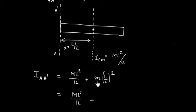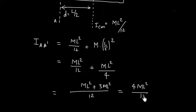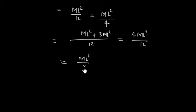Applying the parallel axis theorem: I_A = I_CM + Md² = ML²/12 + M(L/2)² = ML²/12 + ML²/4. Taking the LCM of 12: this equals ML²/12 + 3ML²/12 = 4ML²/12 = ML²/3.